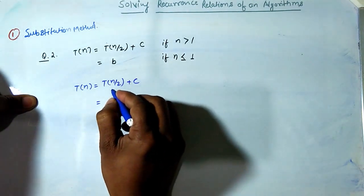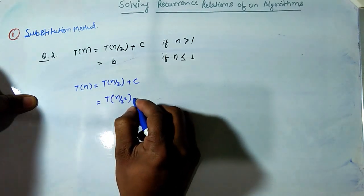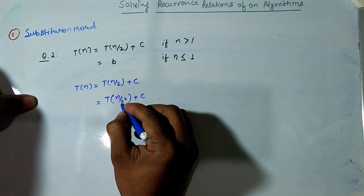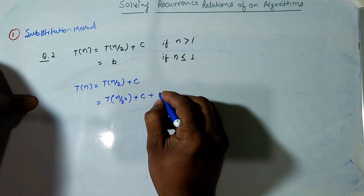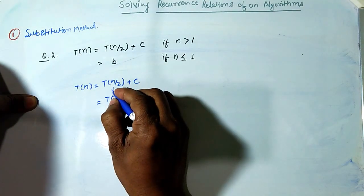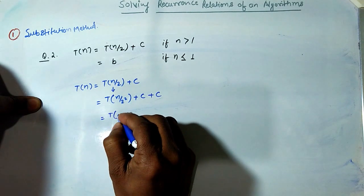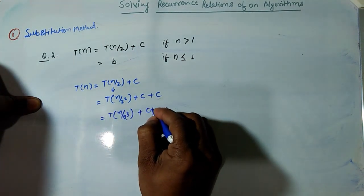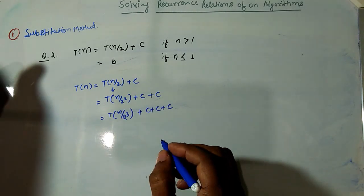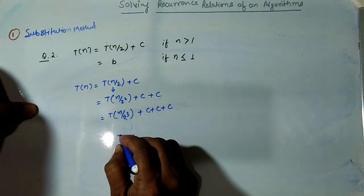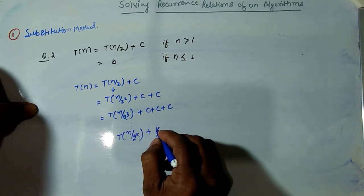T(n/2) = T(n/2²) + c, so substituting: T(n) = T(n/2²) + c + c. Then T(n/2²) = T(n/2³) + c, giving T(n) = T(n/2³) + c + c + c. At the kth iteration it becomes T(n/2^k) + k·c.